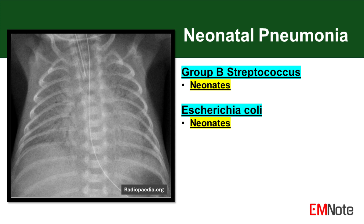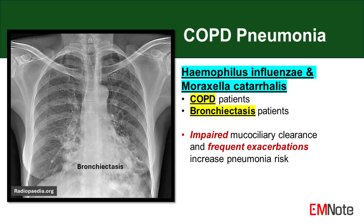Risk factors for neonatal pneumonia include prematurity, which is associated with underdeveloped lung function and immune responses. Maternal colonization with GBS increases the risk of vertical transmission, particularly in the setting of prolonged rupture of membranes greater than 18 hours, which allows for ascending infection.